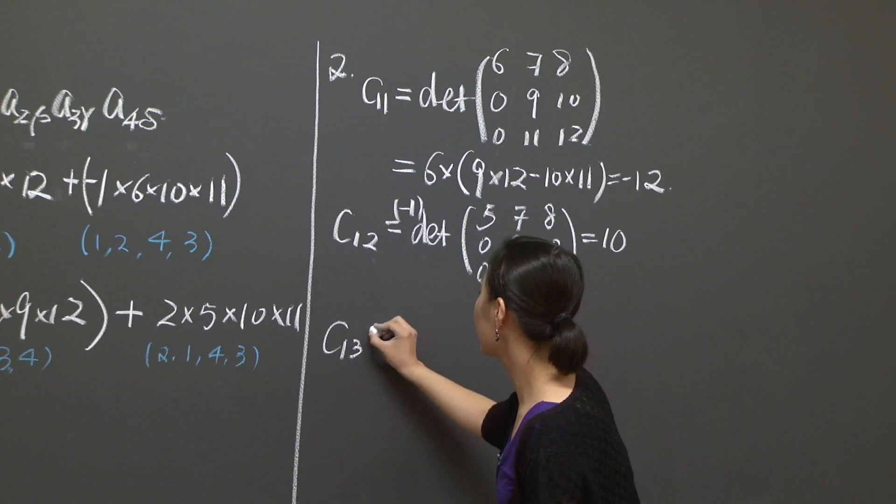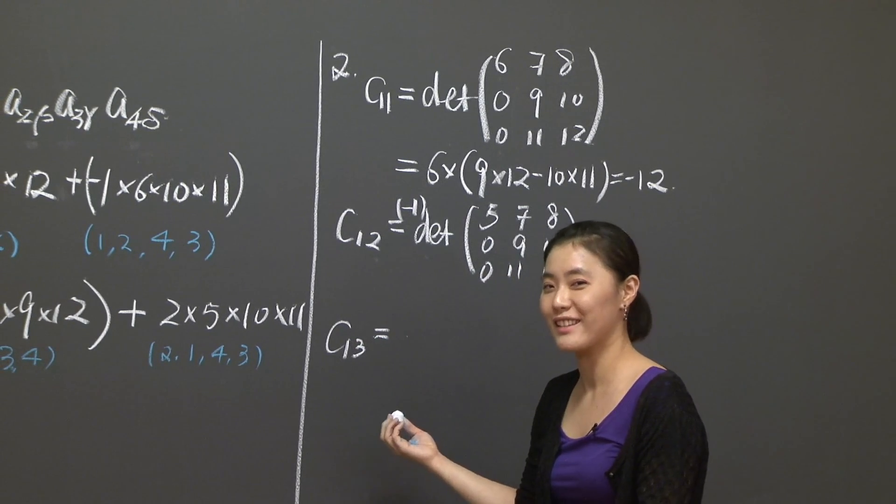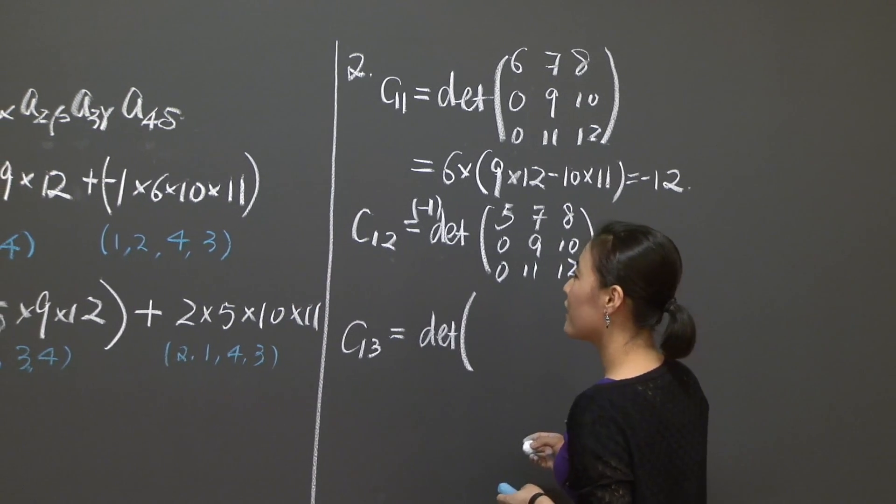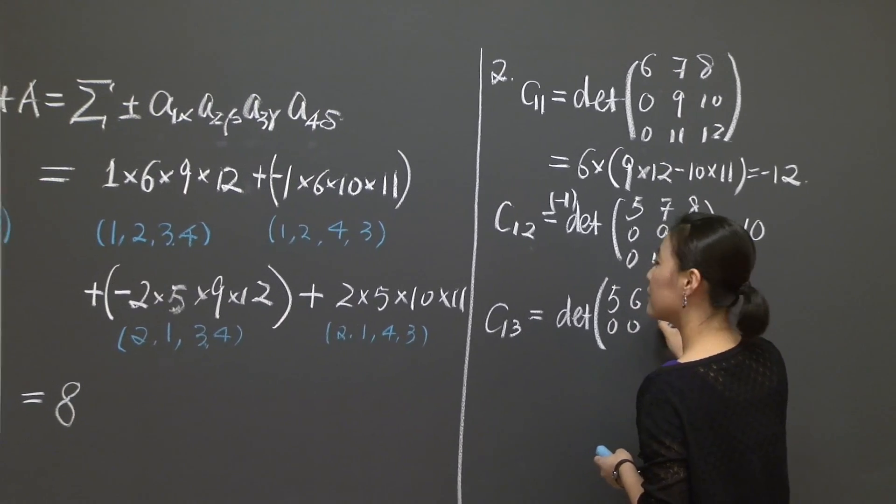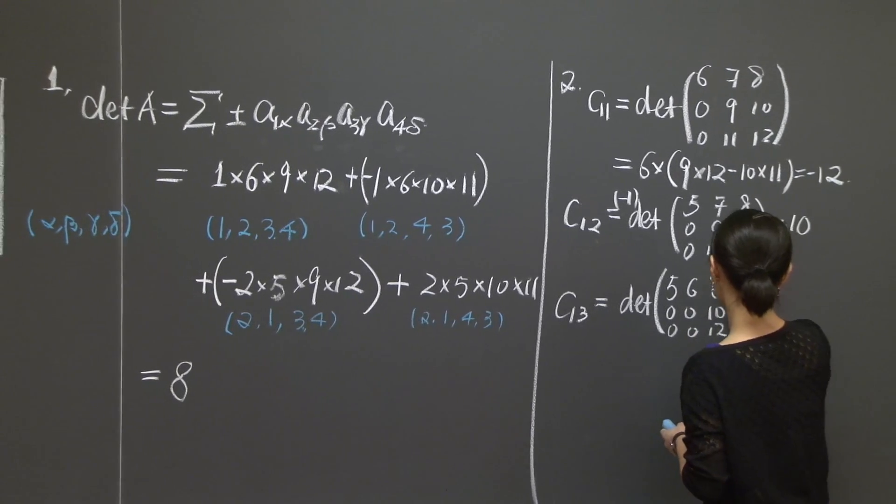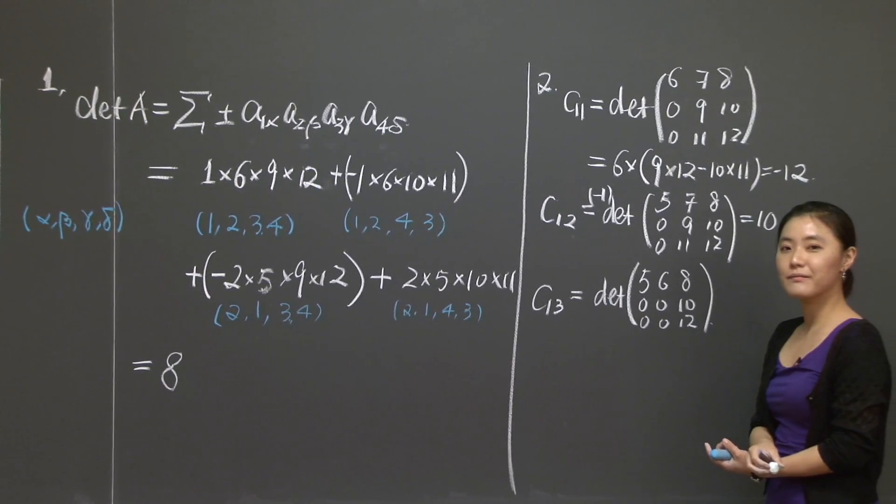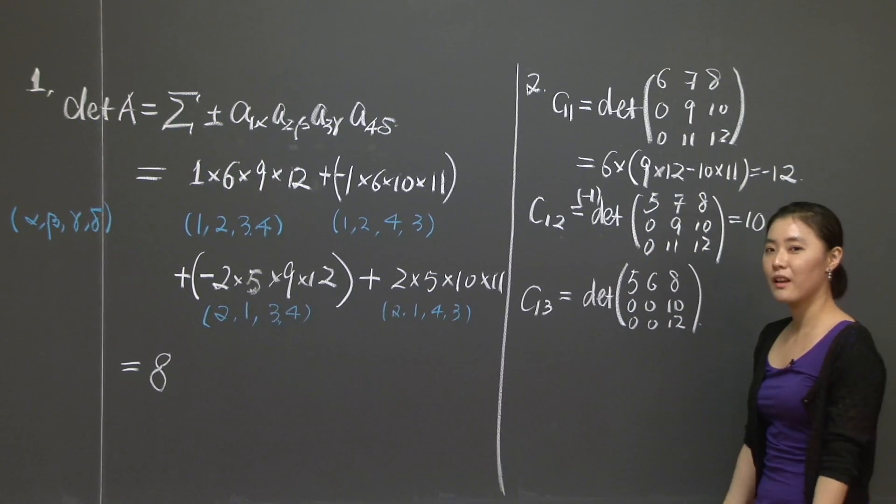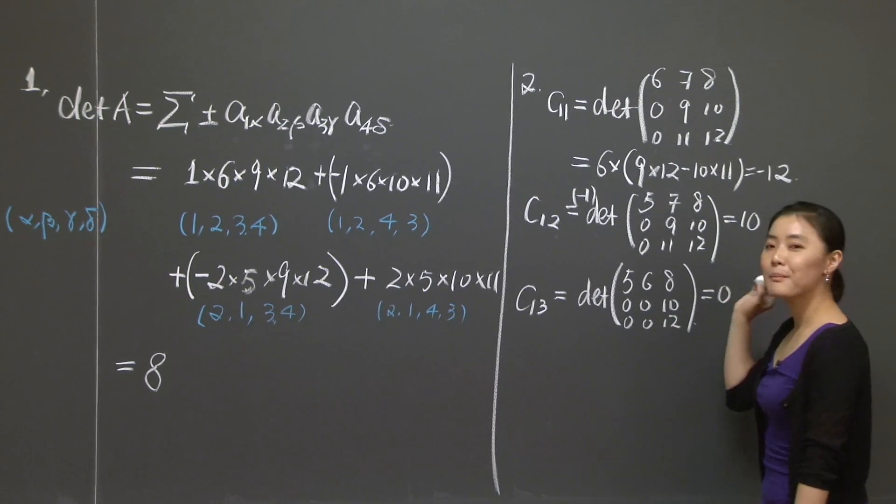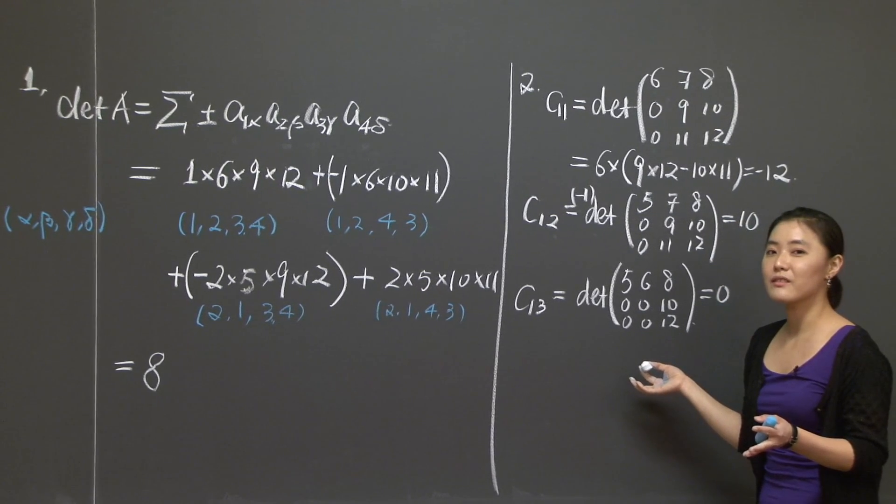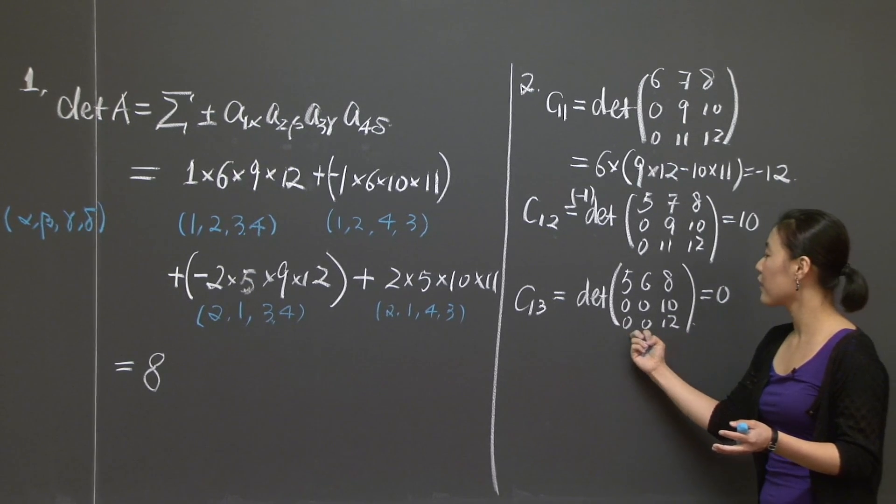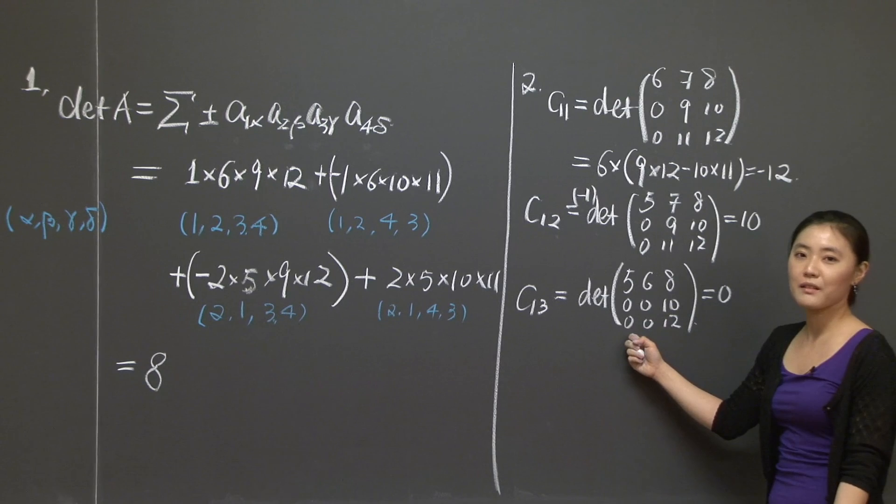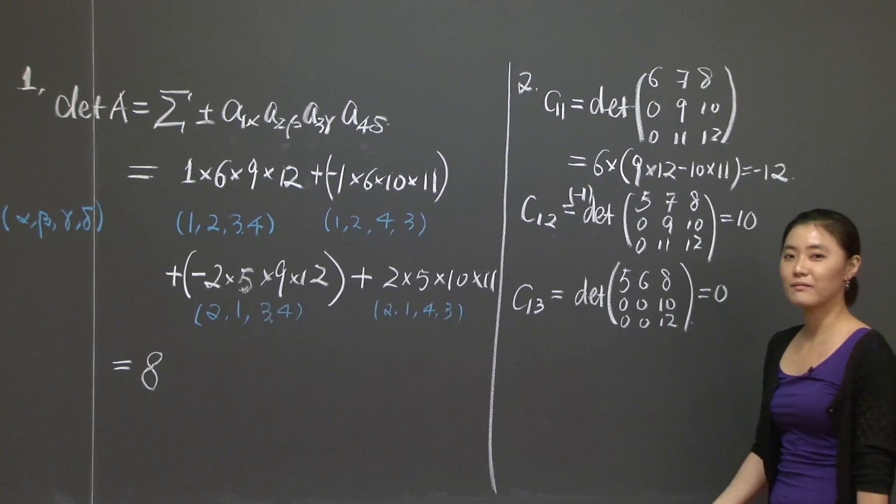Let's continue. C13. Let's hope the computation is going to get easier and easier. C13 is the determinant of the leftover 3 by 3 matrix, so I'll directly read from that. That's going to be 5, 6, 8, 0, 0, 10, and 0, 0, 12. What is the determinant of this matrix? You should be able to tell it without any direct computation. Clearly, the first two columns are linearly dependent because the second column is 6 over 5 times the first column. So this is a singular matrix. Right away, the determinant is 0.